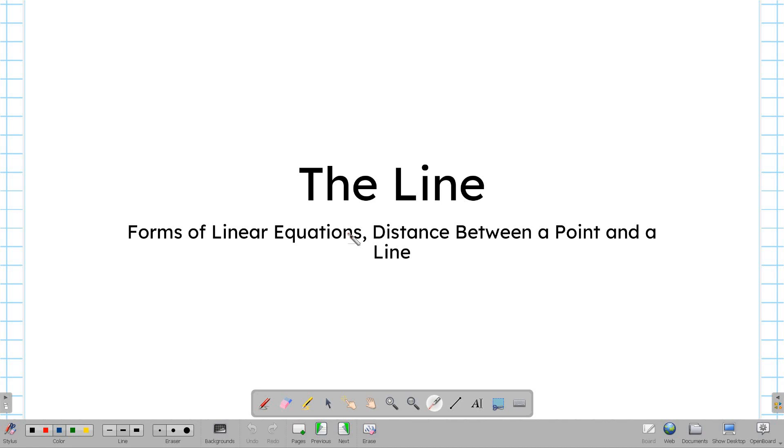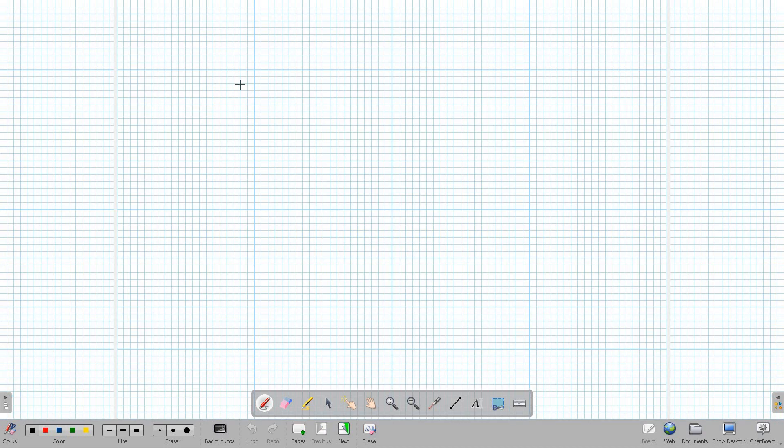division of a line segment, slope, and all of that, we focused on point, which is one of the undefined terms in geometry. If we recall, in geometry, there are actually three undefined terms: point, line, and plane.